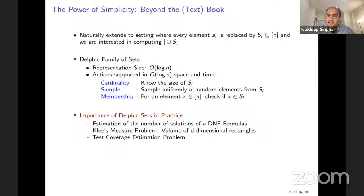We talk about sets which can be completely represented in space logarithmic in the size of the universe — sets that belong to what we call the Delphic family. These sets also allow three operations efficiently: cardinality (you can know the size of each set), uniform sampling (you can sample uniformly at random from the set), and membership (given an element, you can check whether it belongs to the set). All three operations can be done in time polynomial in the log of the universe.